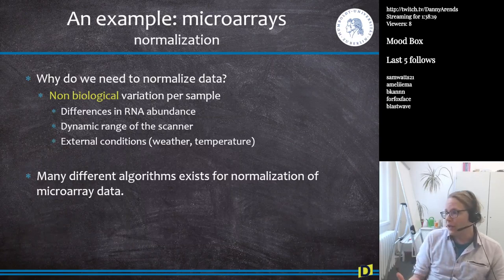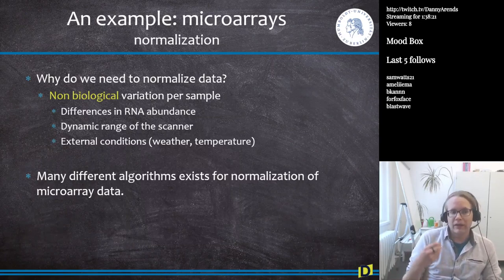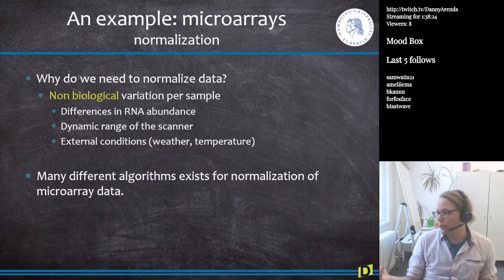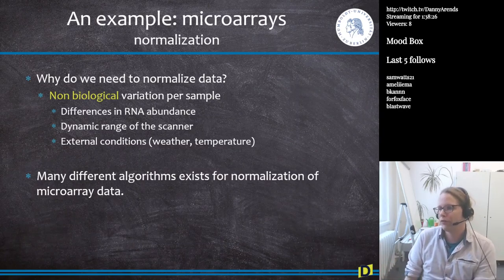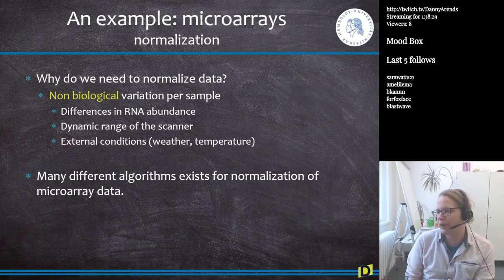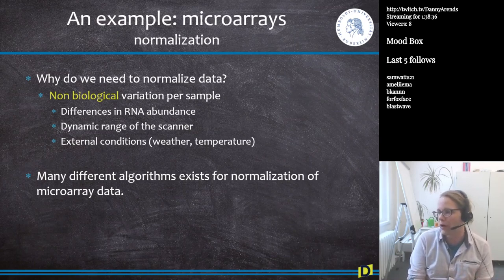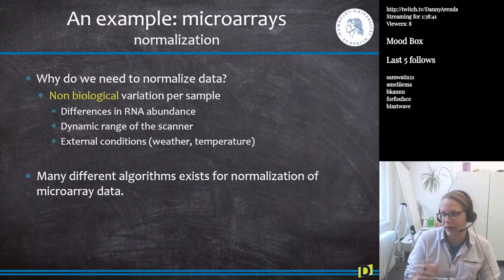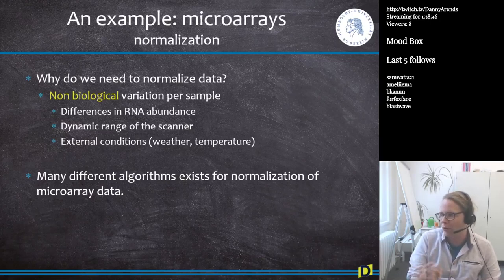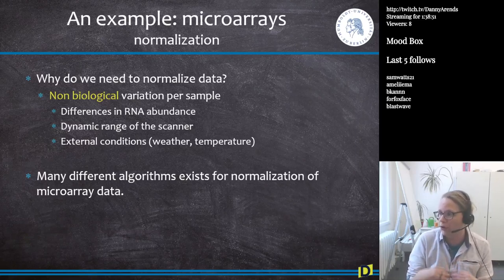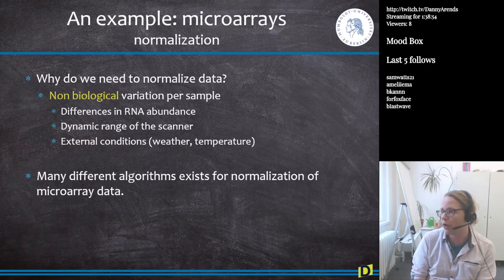The next step is to normalize. Why do we need to normalize? Because there's always some non-biological variation between samples. One microarray might have had a little bit more RNA pipetted onto it than another — you can't pipette exactly 10 nanograms every time; sometimes it's 10.1, sometimes 9.8. This small variance in the total amount needs to be normalized away.